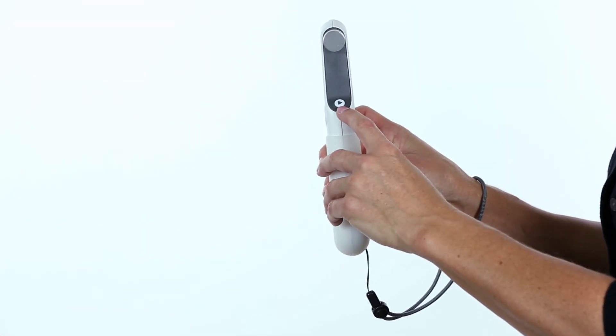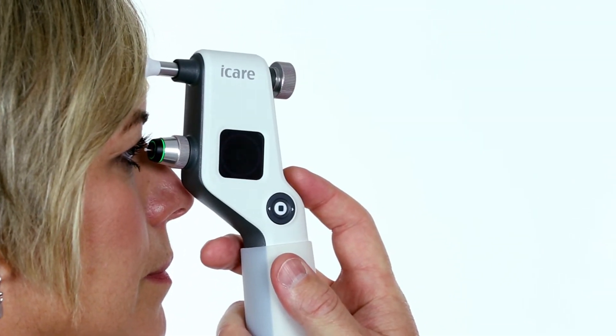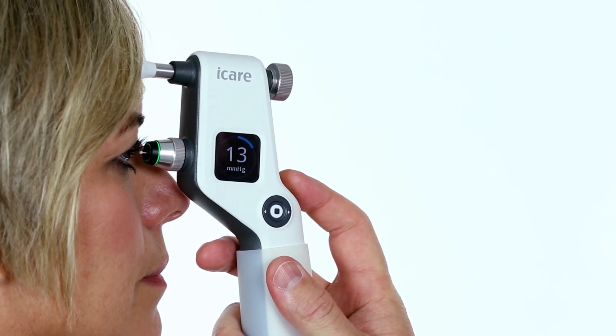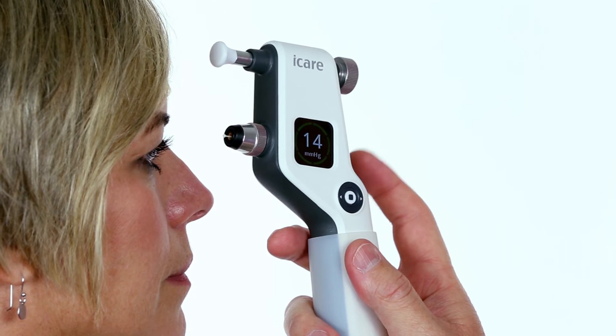Press and hold the measure button to perform the automatic measurement in a series. Six measurements are taken consecutively. Once the measurement is complete, you will hear a long beep, and the final pressure will show on the display.